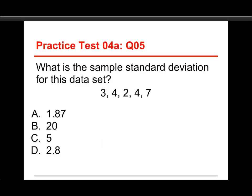All right, what is the sample standard deviation for this data set? And we have 3, 4, 2, 4, 7. Choices are 1.87, 20, 5, and 2.8. Now this is the first question that's going to require some serious calculations. The answer to this one is 1.87. And let me show you how to get to that one.